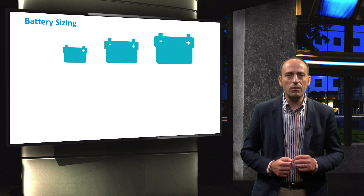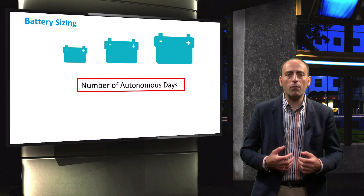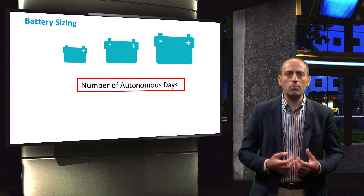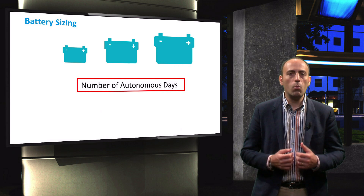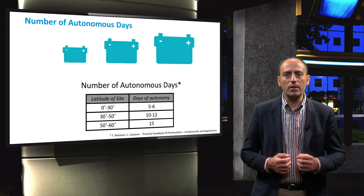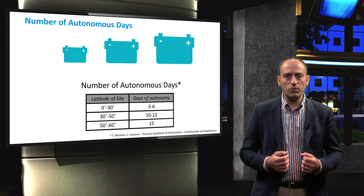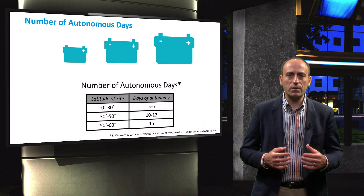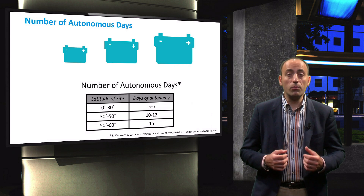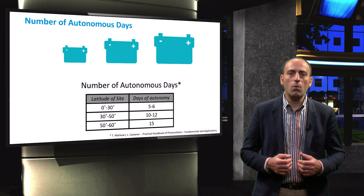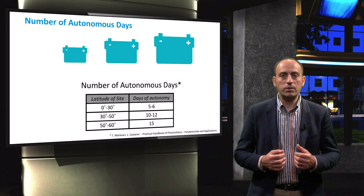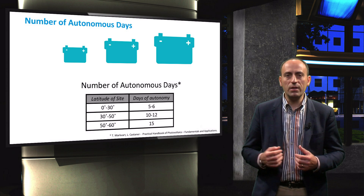A critical parameter for sizing the battery bank is the number of autonomous days. This is the number of days that the PV system should be able to power the loads without energy generation. The appropriate number of autonomous days depends on a number of factors. For larger PV systems, such as in a remote building or in telecommunication systems where the load demands are high, the number of autonomous days can be determined based on their location, using the following table as a guideline.